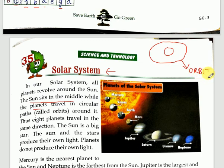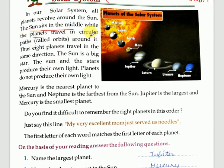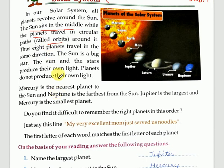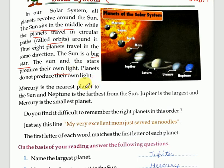The sun sits in the middle while the planets travel in circular paths called orbits. The eight planets travel in the same direction. The sun is a very big star, and the sun and stars produce their own light. Whereas planets do not produce their own light.